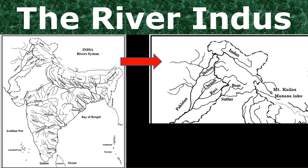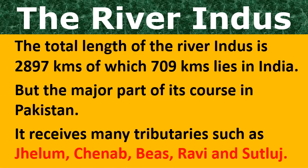Jhelum, Chenab, Ravi, Sutlej, and Beas are the tributaries of River Indus. The total length of River Indus is 2,897 kilometers, of which 709 kilometers lies in India. So the major part of this river flows in Pakistan.